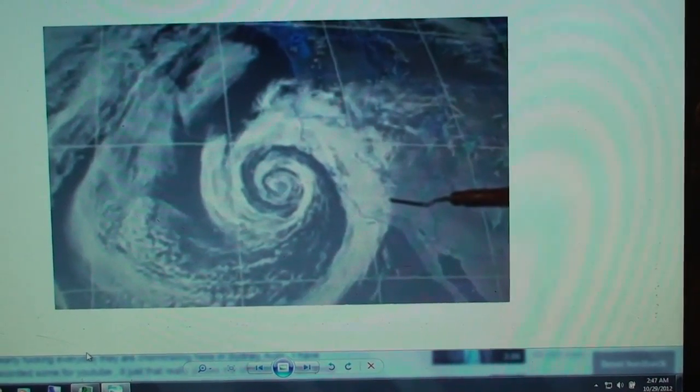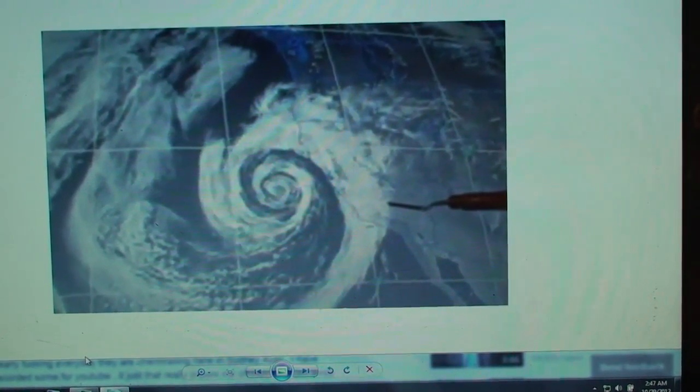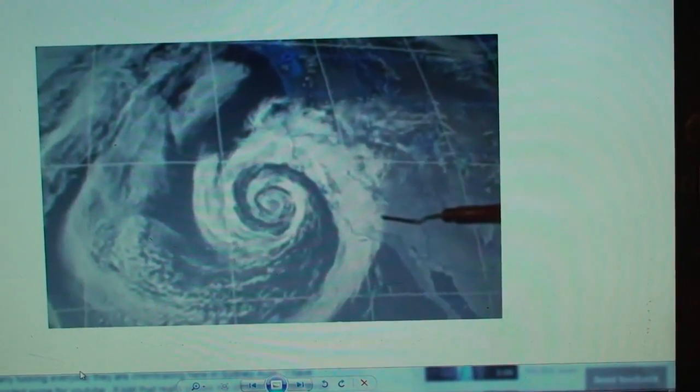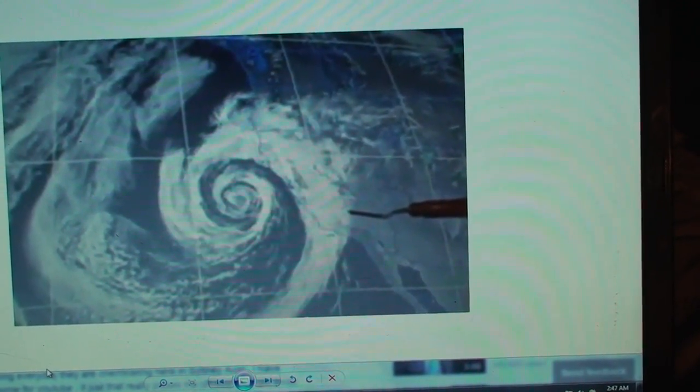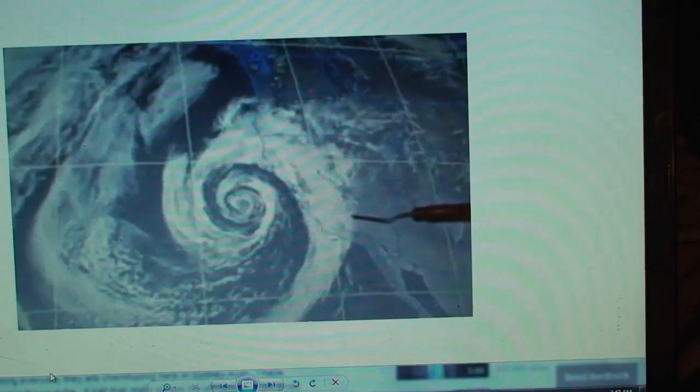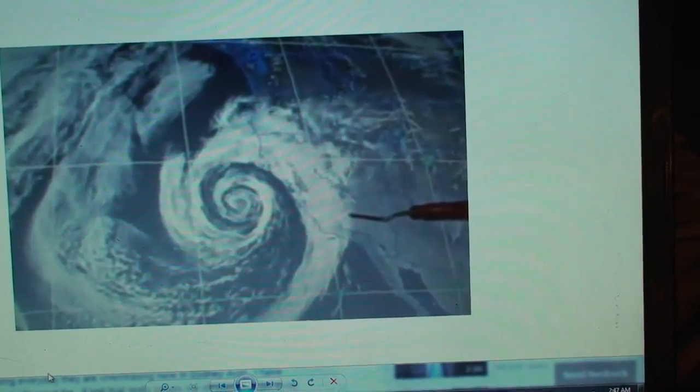They're steering all the chemtrails they're spraying up there. It's definitely steerable. Now think about this - it's dust, real small particles. What does it take for rain to happen? The moisture needs to grab onto a dust particle, right?